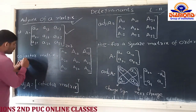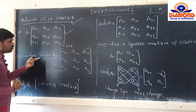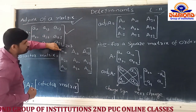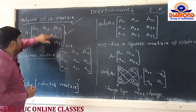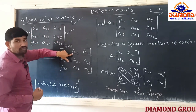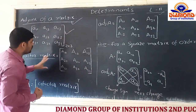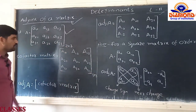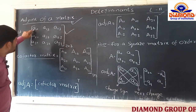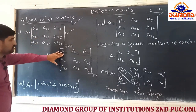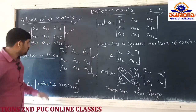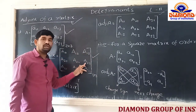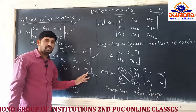So now we form the cofactor matrix - by replacing every small 'a' with capital 'A'. The order of this cofactor matrix is again 3x3. The cofactor matrix contains elements: A₁₁, A₁₂, A₁₃, A₂₁, A₂₂, A₂₃, A₃₁, A₃₂, A₃₃.